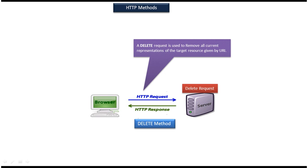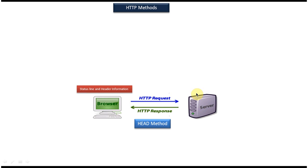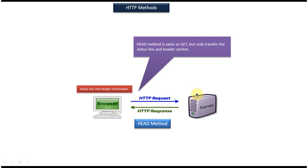Next we will see the HEAD method. Suppose from the server I want to get only the status line and header information for a particular HTTP request — then I can use the HEAD method. Using the HEAD method we can get the status line and header information for a particular request. The HEAD method is similar to the GET method; the only difference is that the GET method returns the status line and header information along with the actual content, whereas HEAD will not return the actual content.